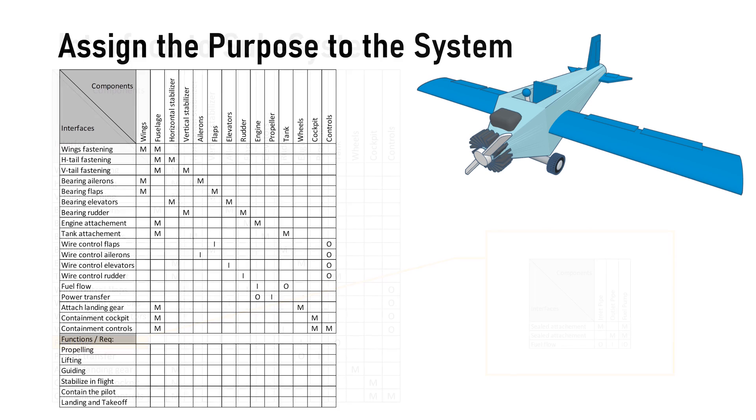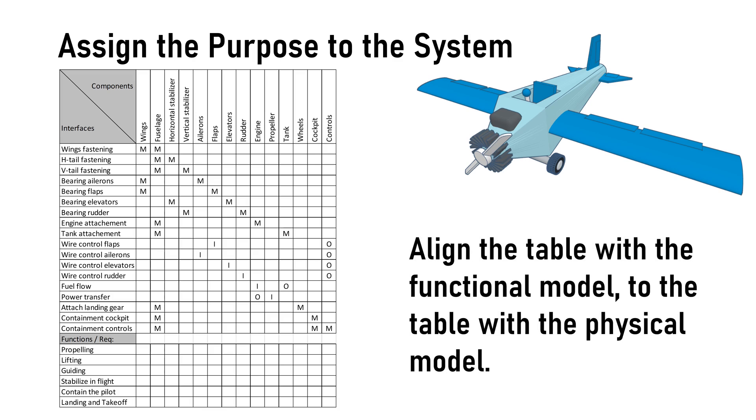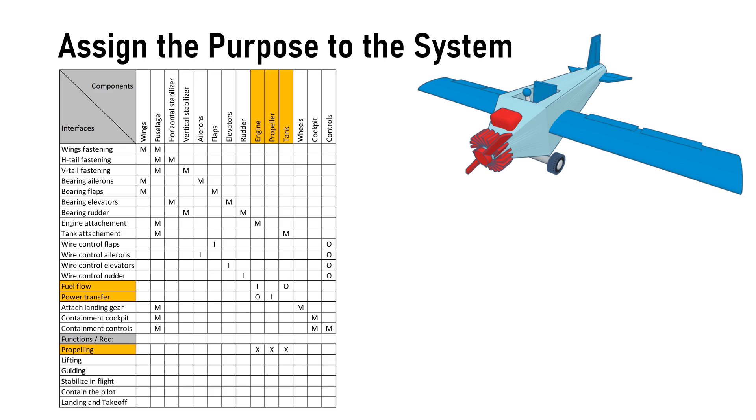Now, let's assume our model of the physical system is complete. In the beginning we have derived the purpose of our machine from the generic functional solution of an airplane. The next step is to link this purpose to the physical system. Here we have the two tables already aligned and we can start. First is the propelling function. It is delivered by the propeller, which is rotated by the motor, which is supplied with fuel by the fuel tank. So we mark all these three components against the propelling function. And the tool automatically highlights the involved interactions as well.